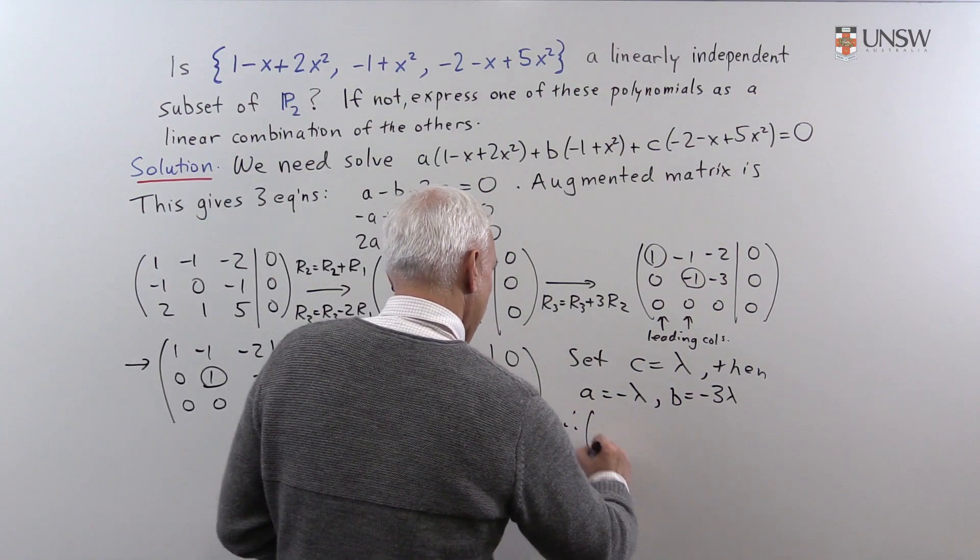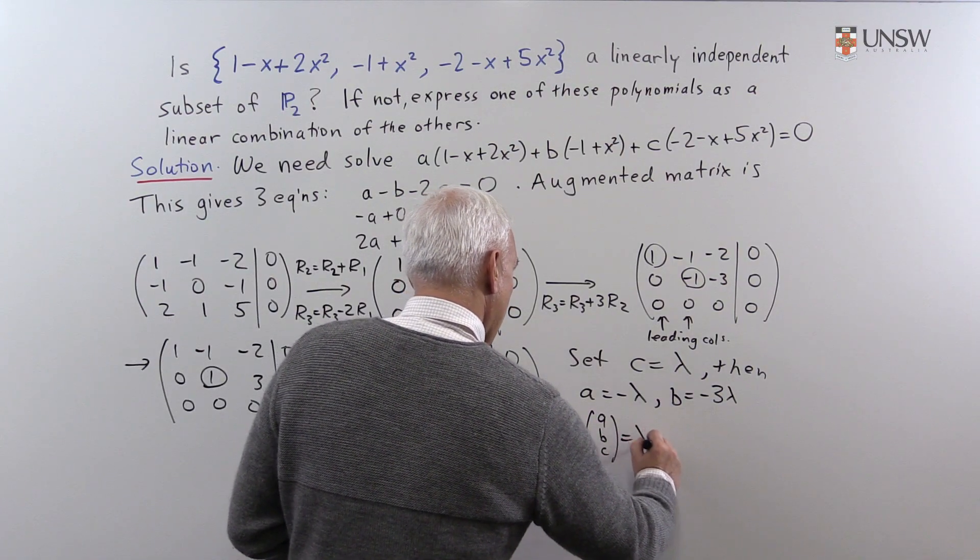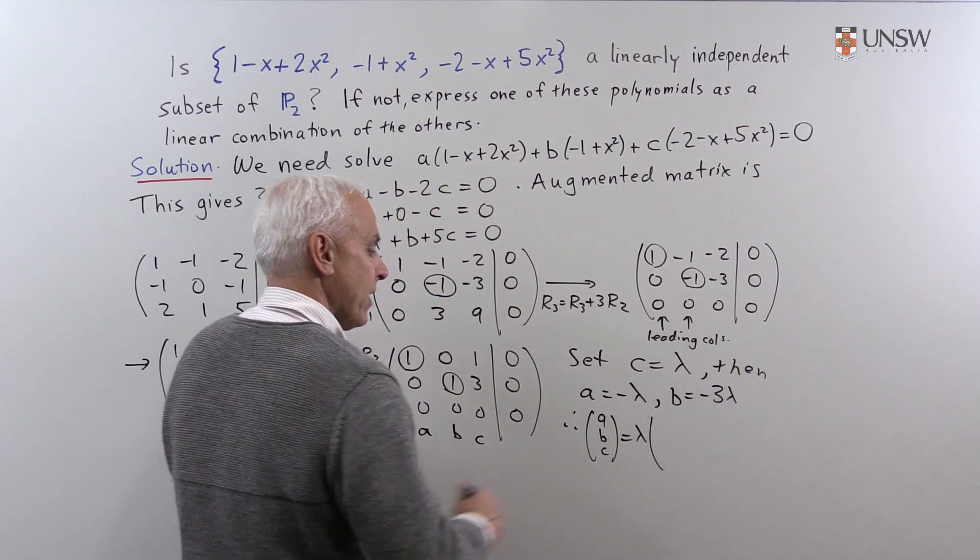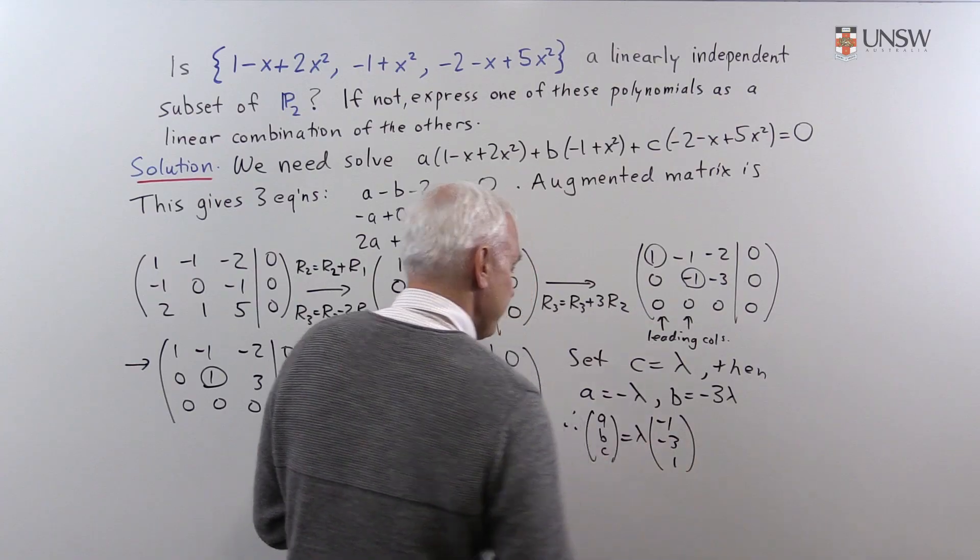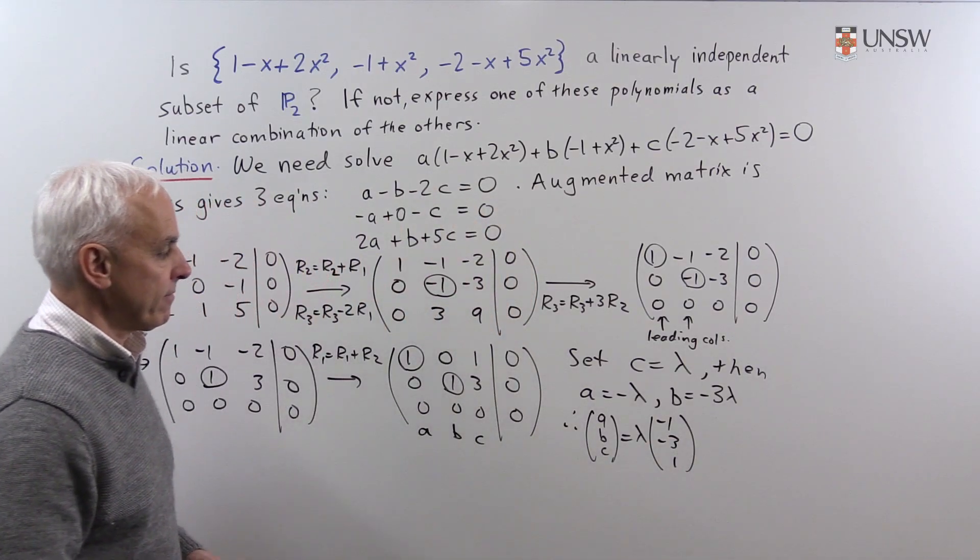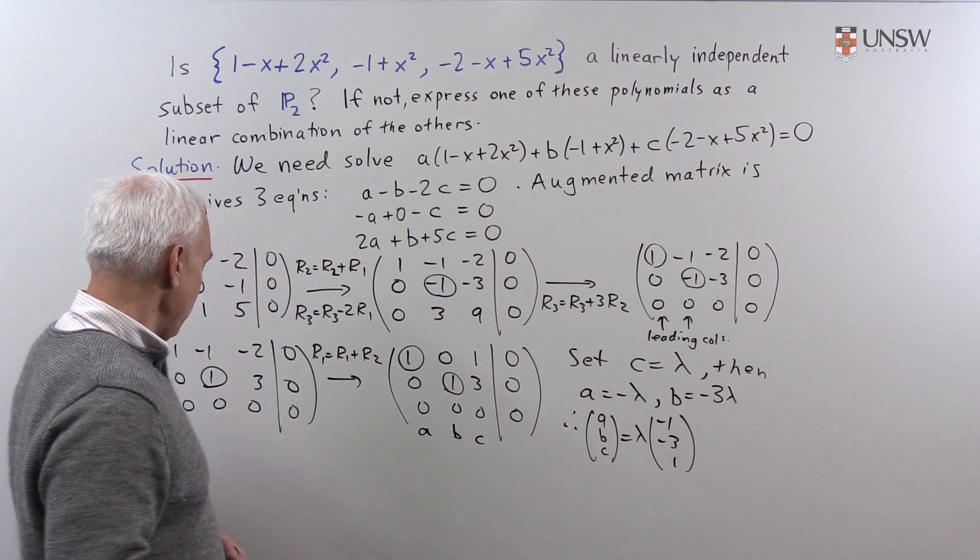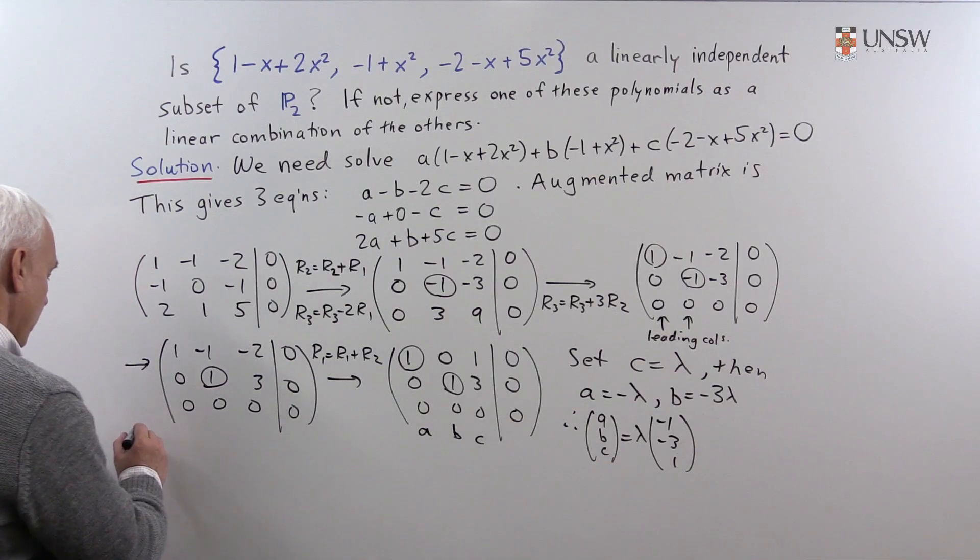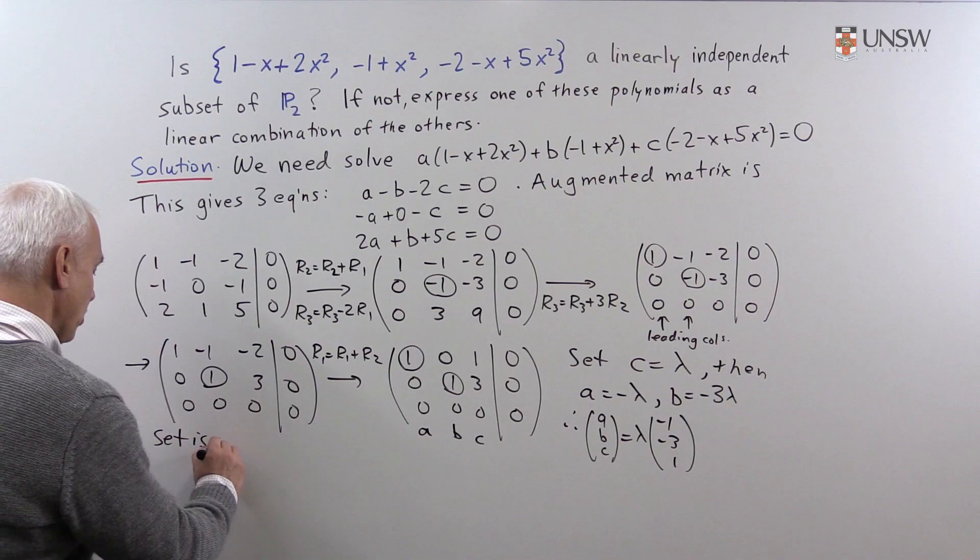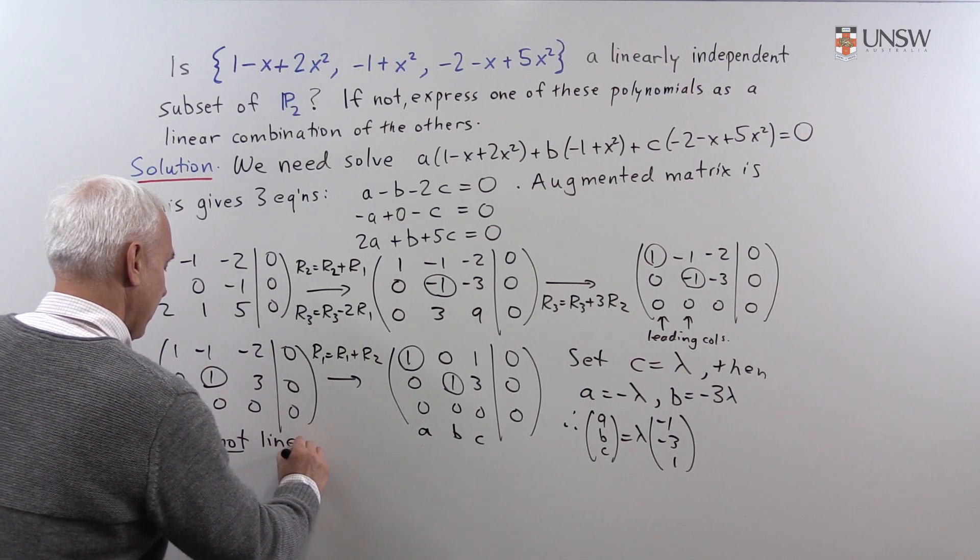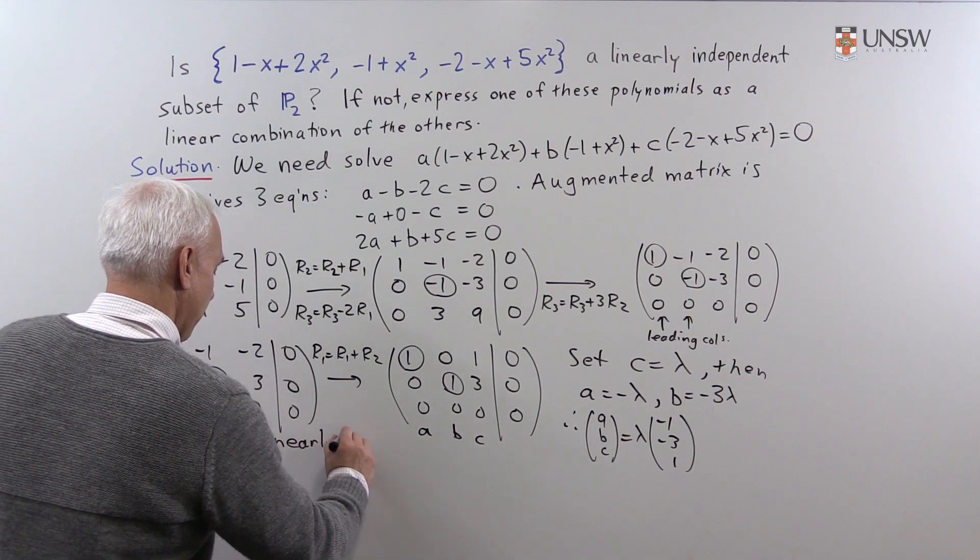So, therefore, we get a, b, and c are lambda times (-1, -3, 1). So, to conclude, therefore, the set is not linearly independent.